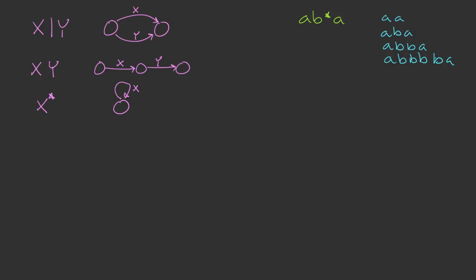So let's go back to our example of A, B-star, A. We see here that we've got basically three pieces: A, B-star, and A. We can convert that by drawing our first edge going from the first to the second state, labeled A, the second edge labeled A as well, and then in the middle is the B loop. The one on the left is our starting state, so we'll draw an arrow going into it, and the last one is our accepting state, represented with a double circle.